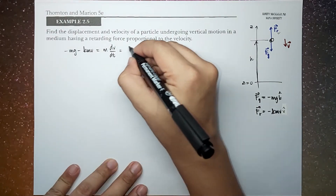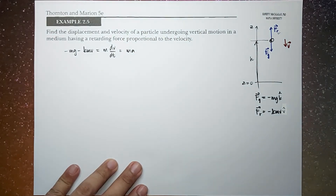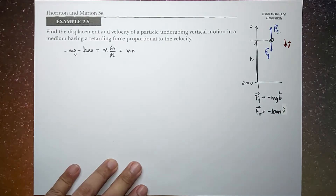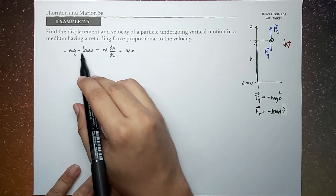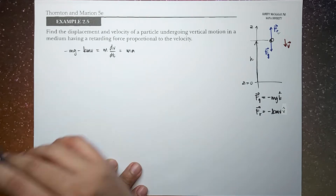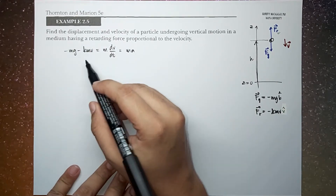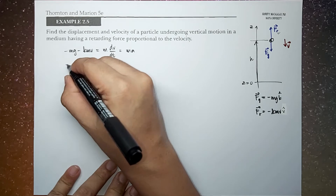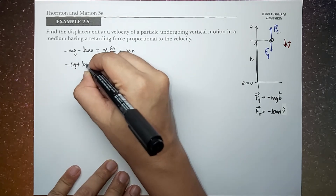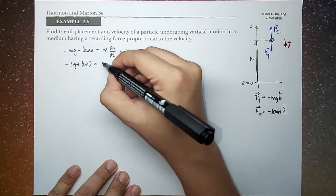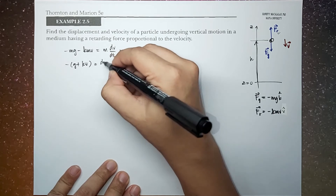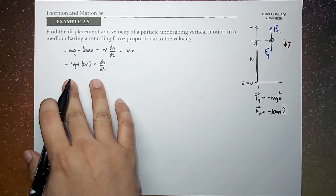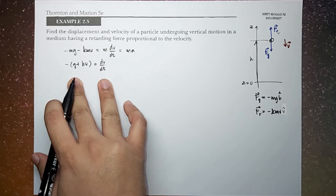If you write the equation of motion in schematic form, we get: g plus kv equals the derivative of v with respect to time. We can rearrange this to solve this differential equation.